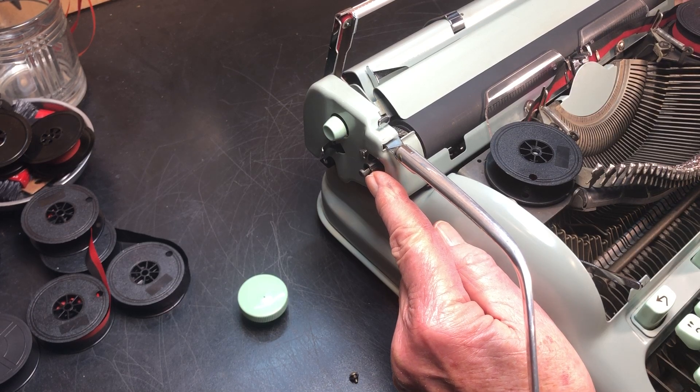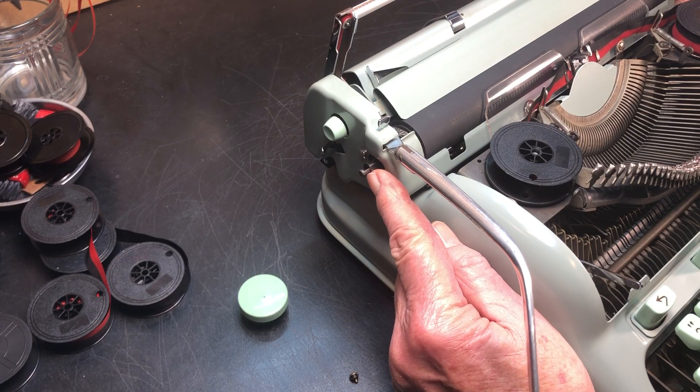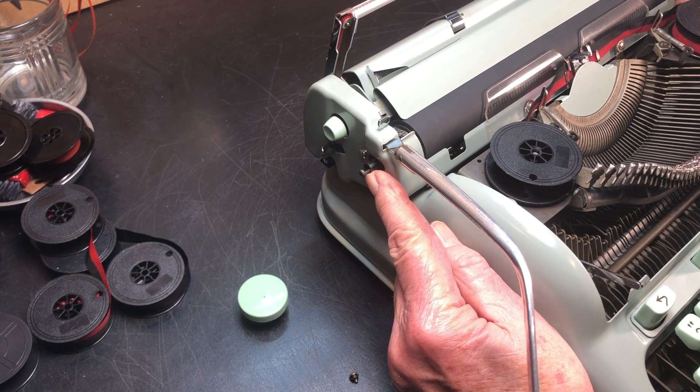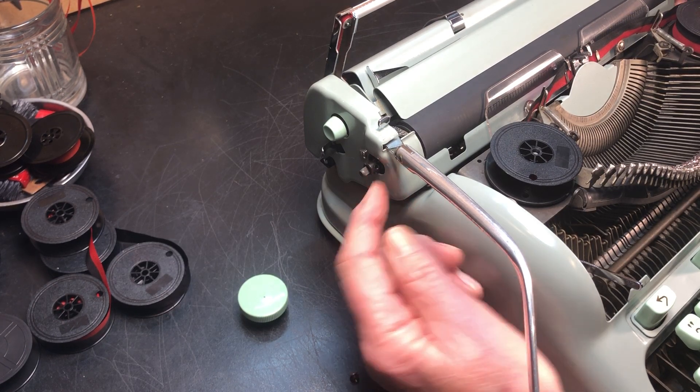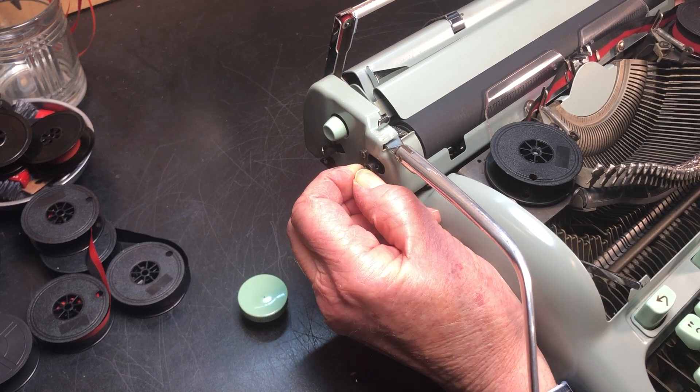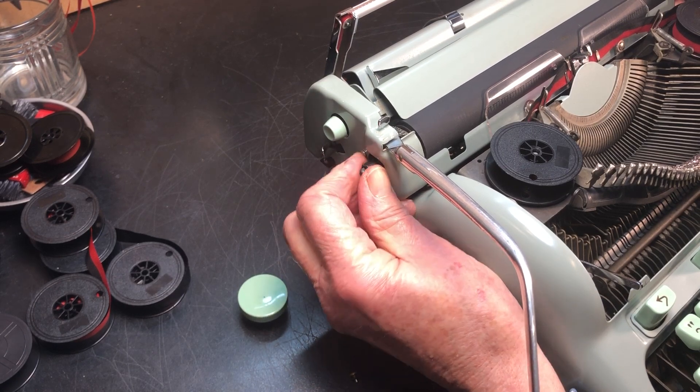If you tighten it into somewhere around here, obviously nothing will work. It won't move. So it has to be into that notch. And that notch, this is the variable mechanism.